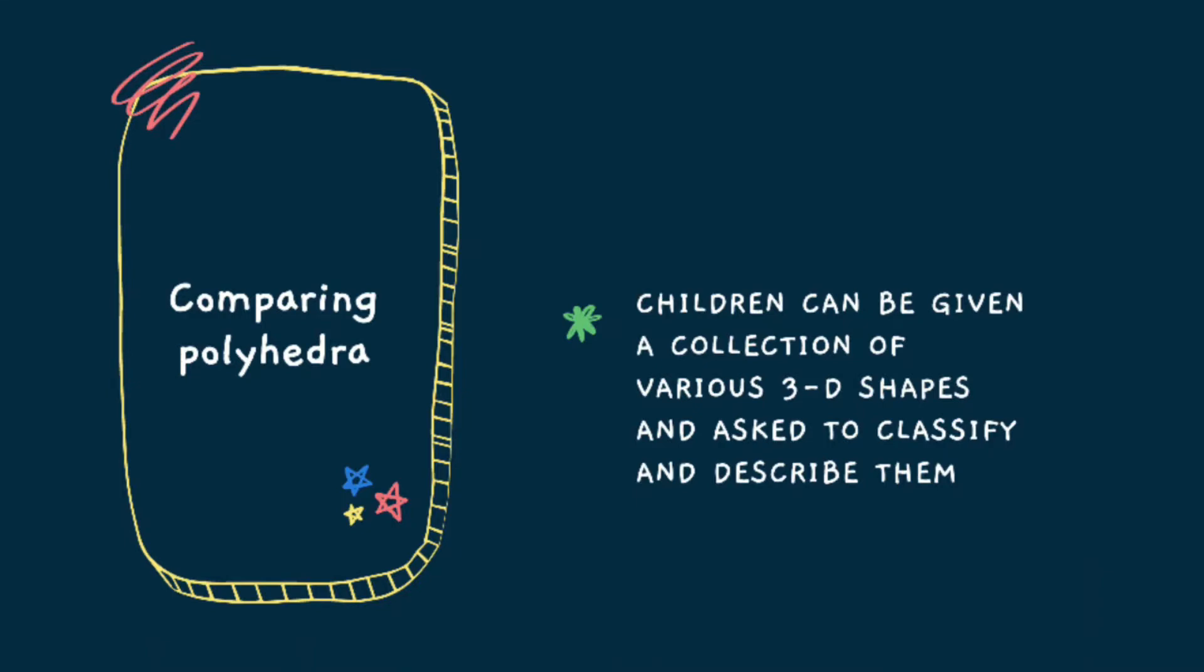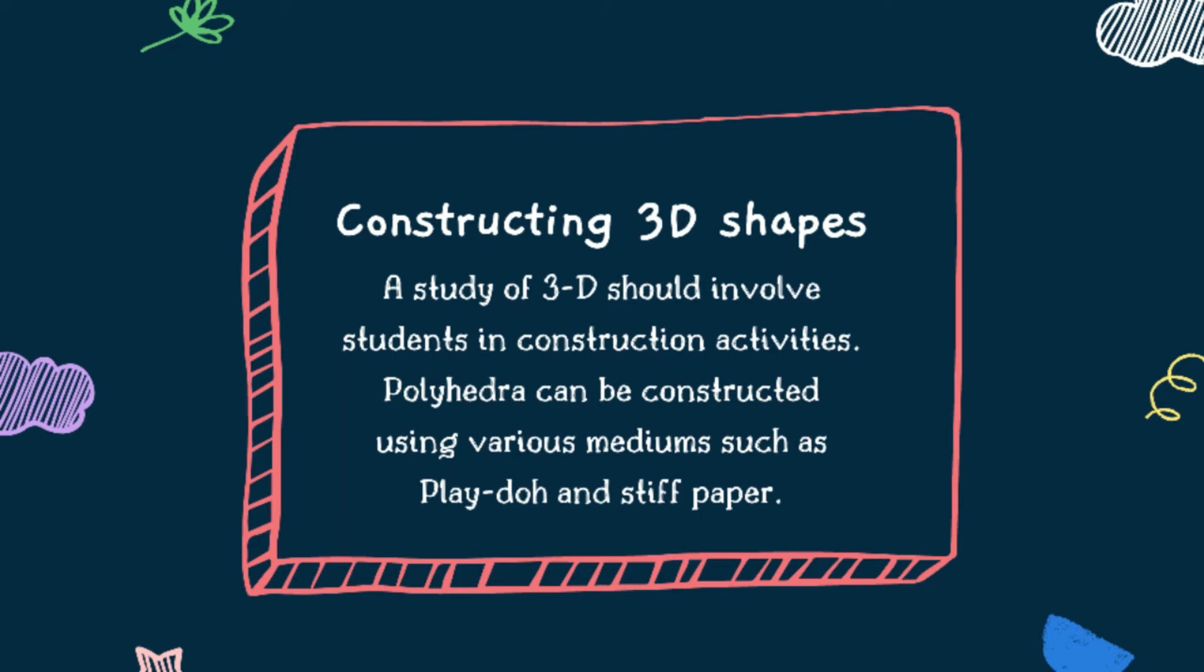Comparing polyhedra. Children can be given a collection of various three-dimensional shapes and asked to classify and describe them. Activities should make the students verbalize what they notice about the shapes. A teacher should attempt to provide frequent opportunities for students to express geometric ideas orally. Constructing three-dimensional shapes. A study of 3D should involve students in construction activities. Polyhedra can be constructed using various mediums such as play-doh and stiff paper.